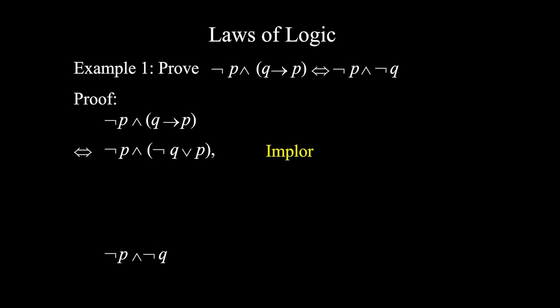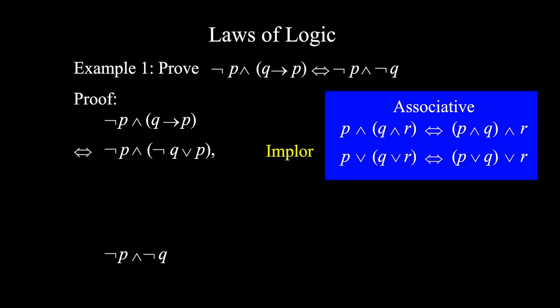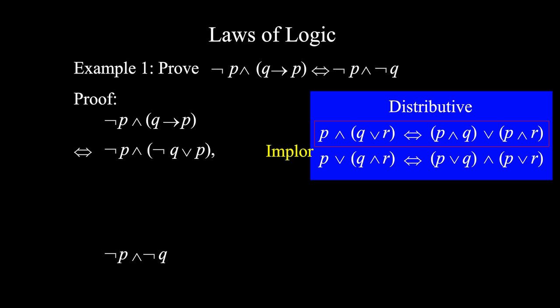What law should we apply next? Well, look at the laws — which one has a form similar to this? Absorption? No, because in absorption the same proposition should appear both outside and inside the bracket, but here we have ¬p outside and p inside. Associative? No, because for associative the operation should be the same. How about distributive? Yes, we can try that. So this is equivalent to (¬p ∧ ¬q) ∨ (¬p ∧ p).